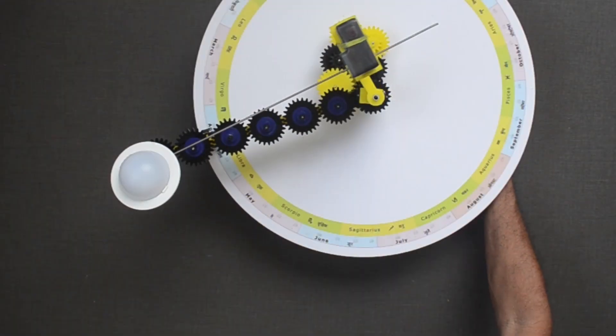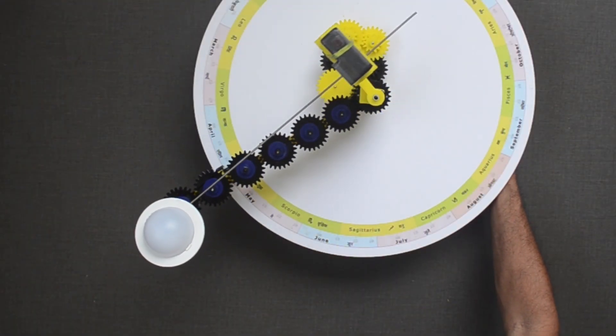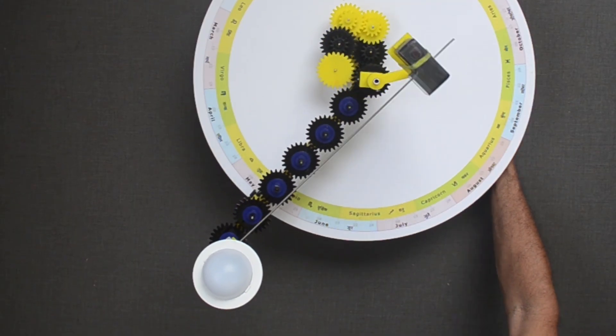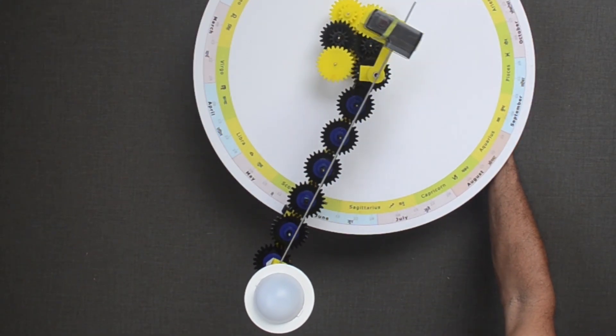As Saturn travels in its path, orientation of the ring changes. This change is not visible to the naked eye, but you will need a telescope for the same.